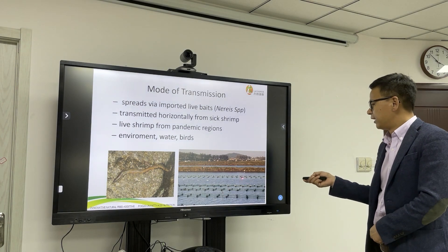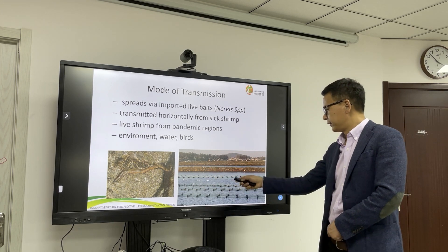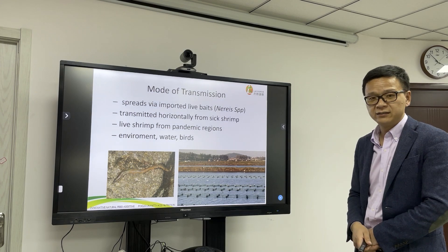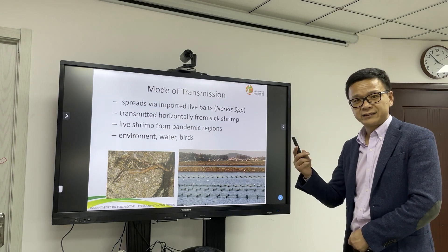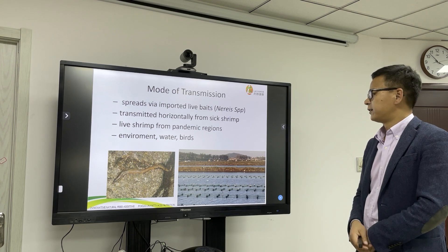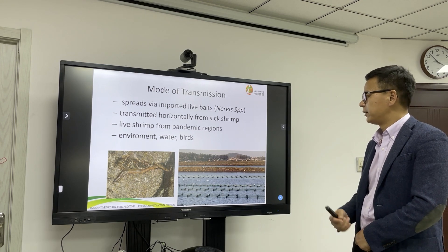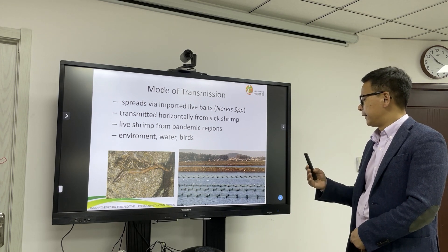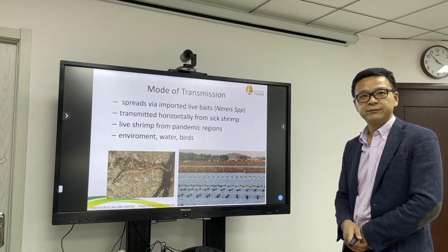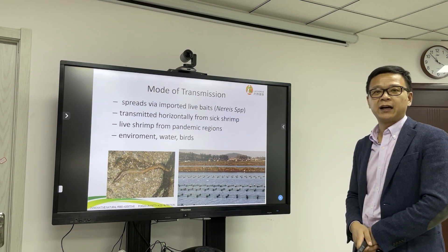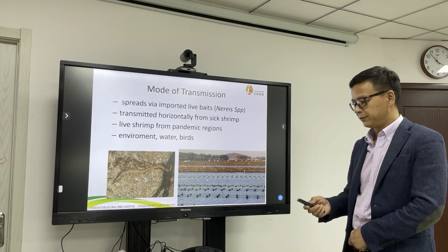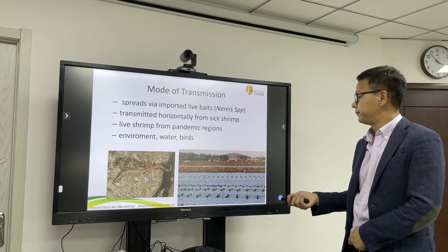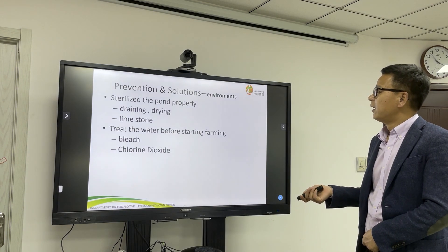Here we can see a lot of birds in the pond, which is not a good sign for culture. Once the pond has a problem, the sick shrimp will attract birds to come. When birds eat the sick shrimp and then fly to other ponds, feces can drop into the pond — indirectly transmitting EHP.